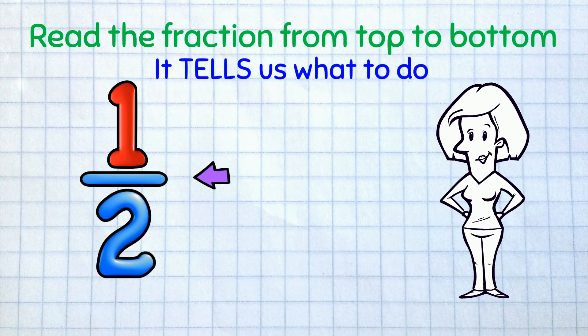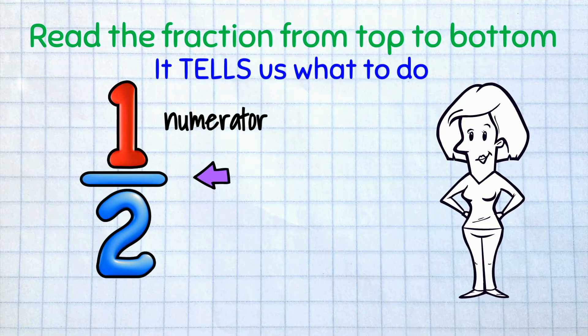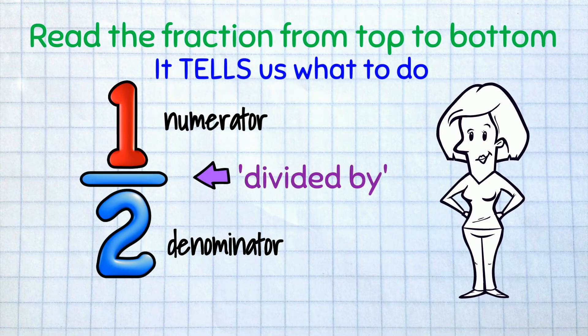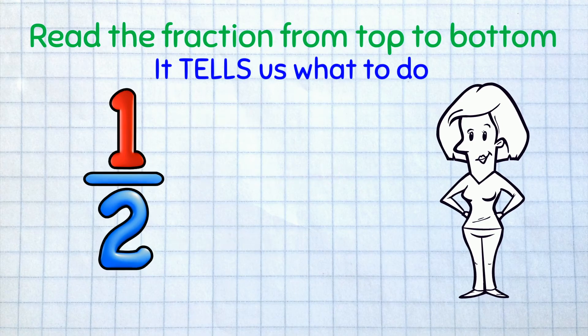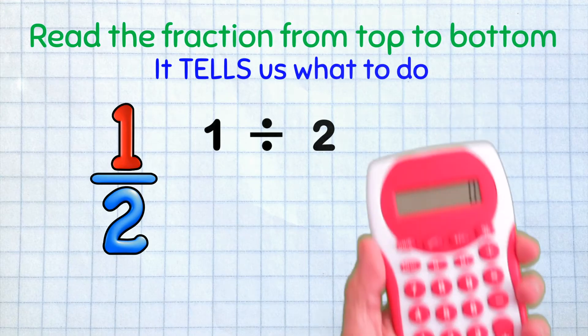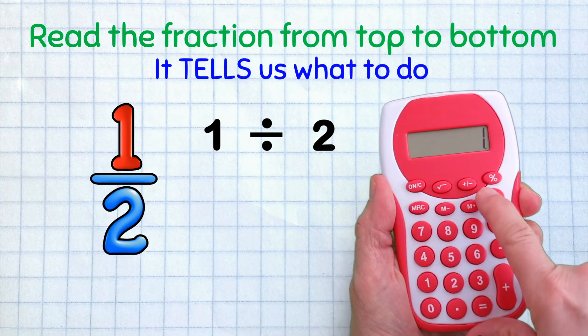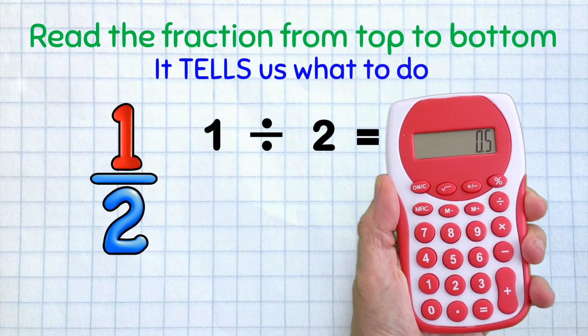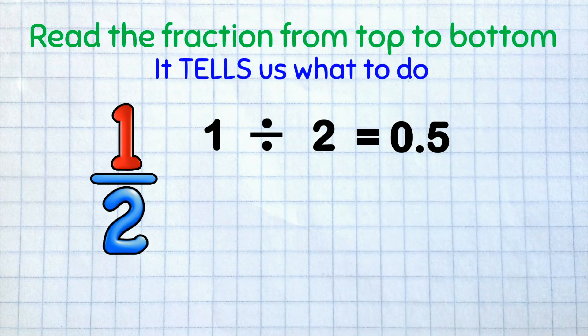This fraction bar separating numerator and denominator means divided by. We can read 1 half as 1 divided by 2. On the calculator, 1 divided by 2 equals 0.5 - the decimal equivalent!